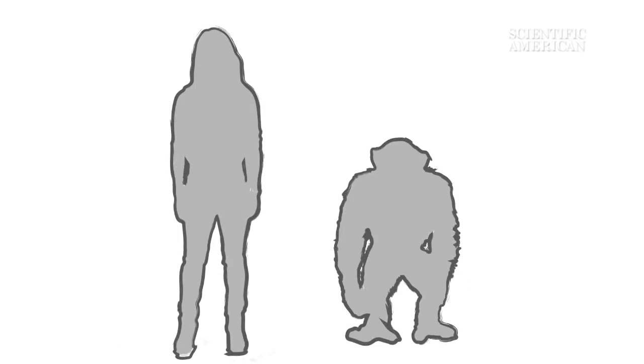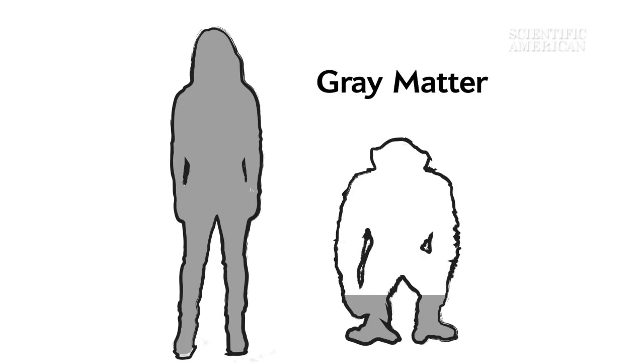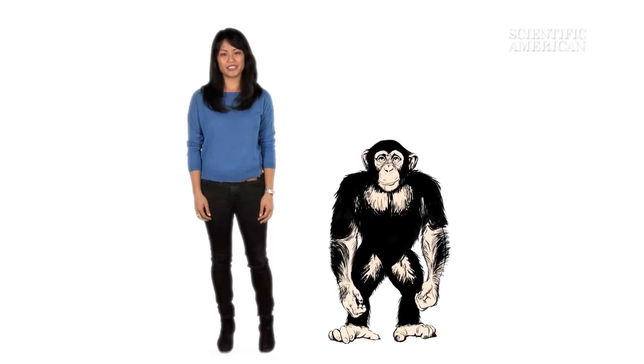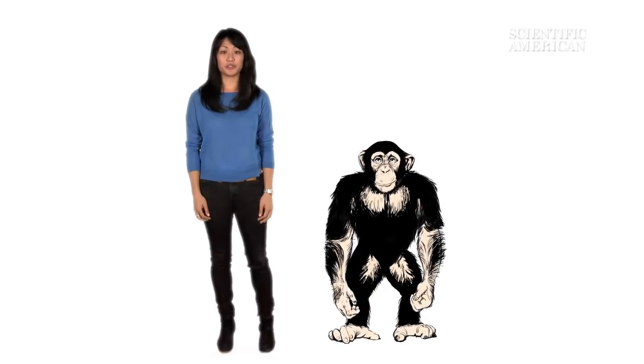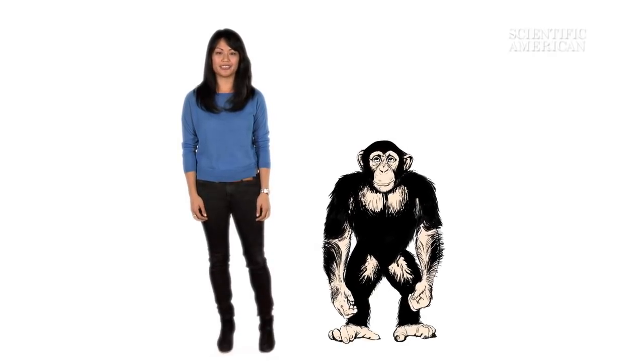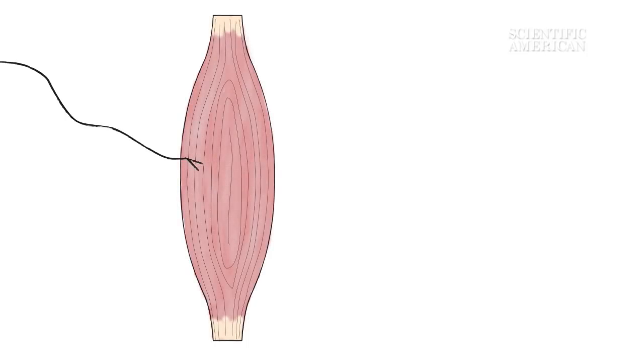Compared to humans, chimps have less gray matter relative to body weight. Gray matter is the part of the nervous system that contains the nerves responsible for controlling motion. These branch out from the spine into the muscles to control individual muscle fibers.